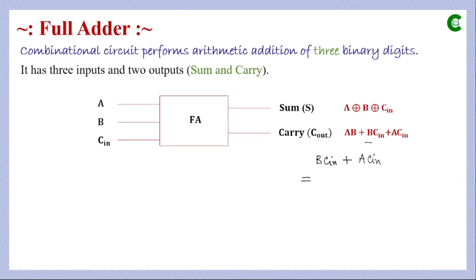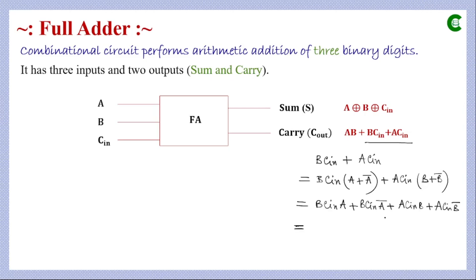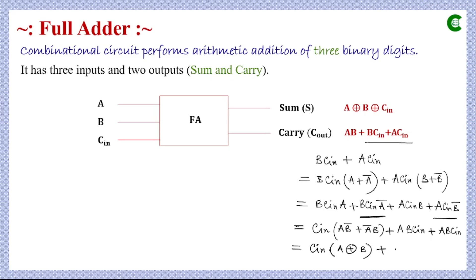To express C_out using XOR, we take the terms B·C_in and multiply by (A + A̅), which equals 1, and we take A·C_in and multiply by (B + B̅). Simplifying further, we get C_in·(A̅·B) and C_in·(A·B̅). Combining these two terms, we factor out C_in, giving C_in·(A·B̅ + A̅·B), which can be written as C_in XOR'd with (A XOR B), along with the remaining terms. We are now representing C_out using XOR gates.